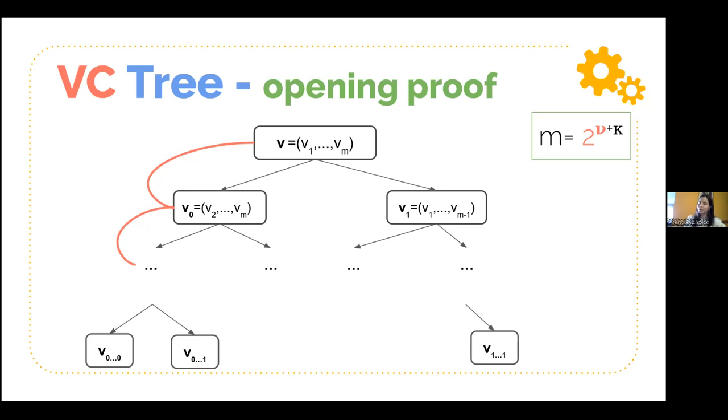And then if you compute your tree having depth nu, you as a prover, will have to pre-compute and store two to the nu proofs that relate every level with the previous one.